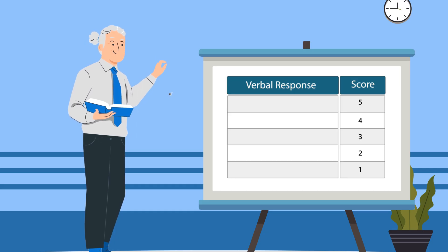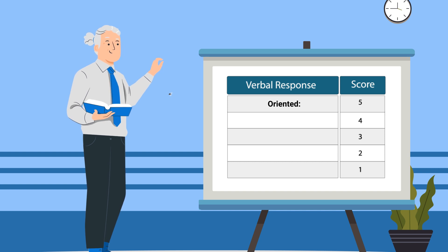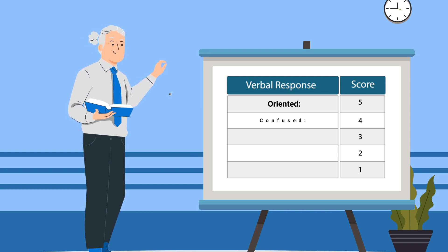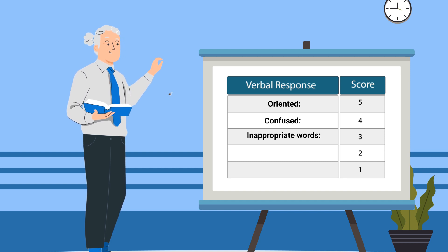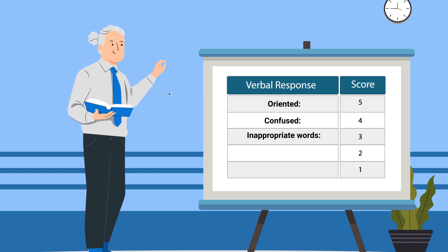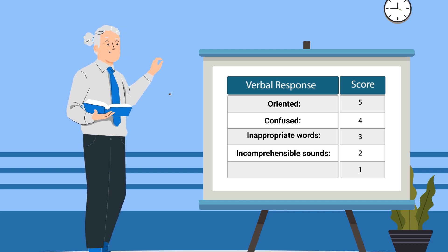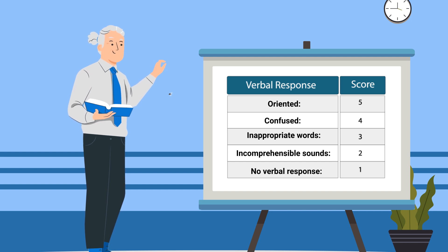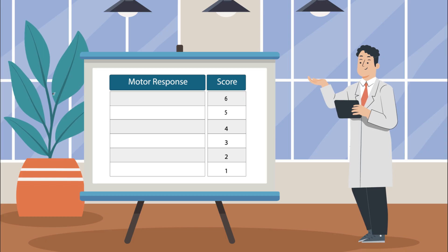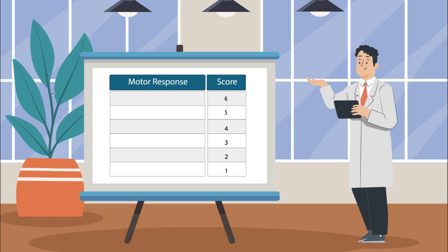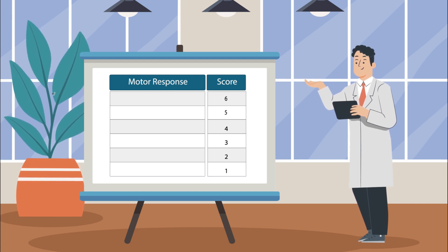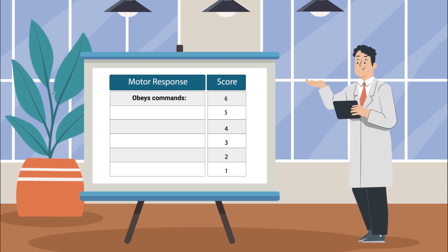Next, we'll look at their verbal response. If the patient is oriented, they get a score of five. If they are confused, they get a score of four. If their response includes inappropriate words, they get a score of three. If it includes incomprehensible sounds, they get a score of two. And if there is no verbal response, they get a score of one.